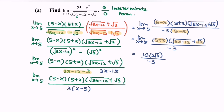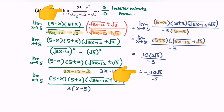So as a conclusion, the limit as x approaches 5 for the function (25 minus x squared) over (square root of 3x minus 12 minus square root of 3) equals negative 20 square root of 3 over 3.